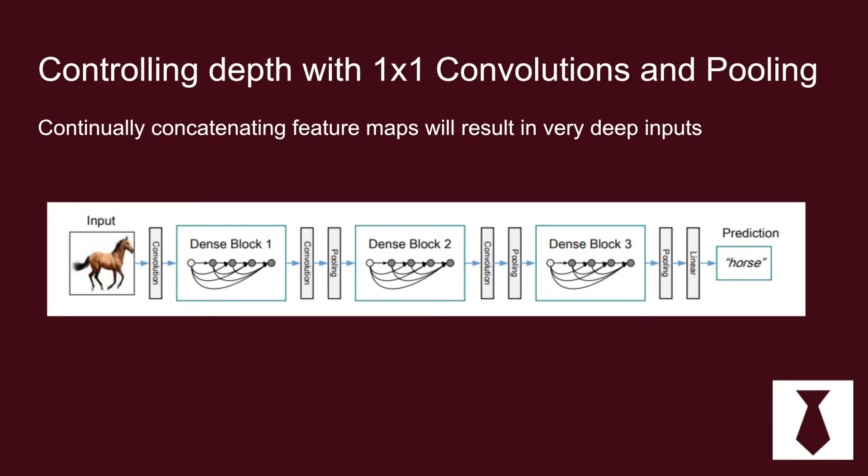If you have like 10 dense blocks all in a row connected to each other in this way, they'll get really deep. So what they do in the DenseNet model is they break up the dense blocks such that they can use a 1x1 convolution. A 1x1 convolution preserves the spatial resolution but shrinks the depth of the feature map, and then they have max pooling to reduce the feature map size.